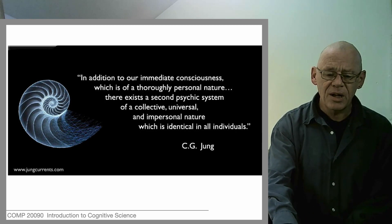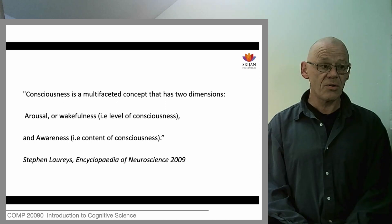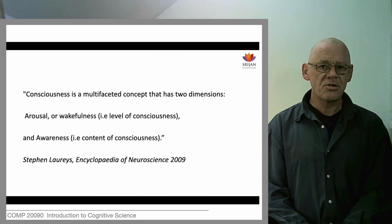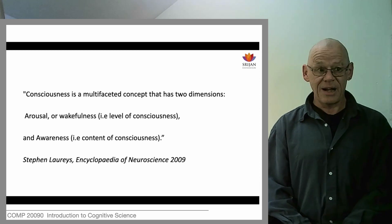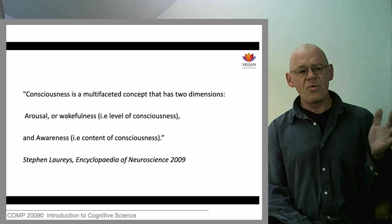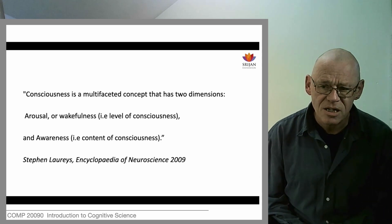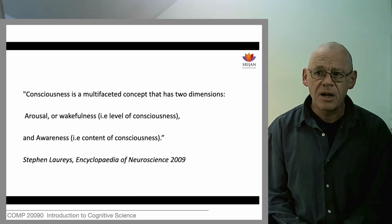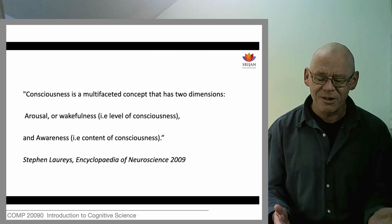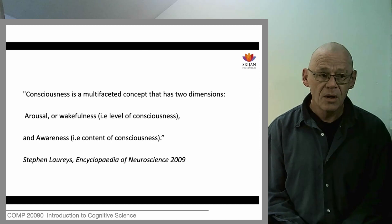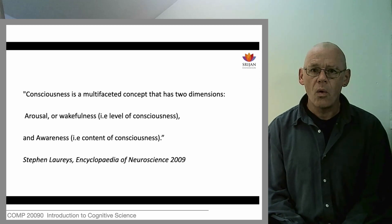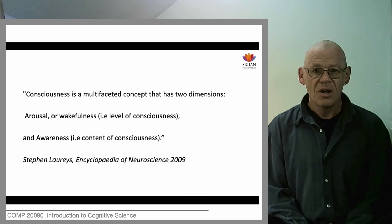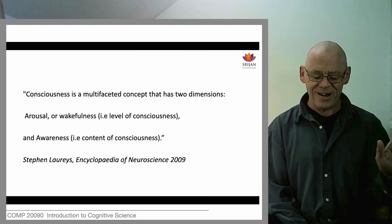When you encounter a claim like this — from the Encyclopedia of Neuroscience — 'simply stated, consciousness is a multi-faceted concept that has two dimensions: arousal or wakefulness, that is level of consciousness, and awareness, the content of consciousness' — what should you do? The answer is: either disregard it completely, because it's clearly not sufficiently informed about the richness of the concept it's discussing, or regard it as a very narrow approach that teases out one sense of the term. You should not be intimidated by this kind of statement or take it as simple fact.